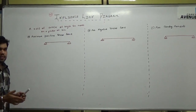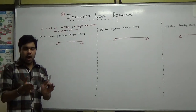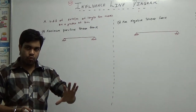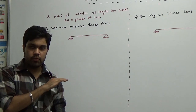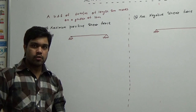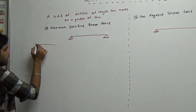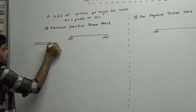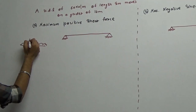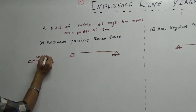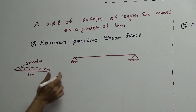Consider the example of an army tank moving on a road. It doesn't apply just a point load — it has a complete uniform distribution of load. In this problem, a 60 kN per meter UDL of 5 meter length is moving on a girder of 16 meter span.